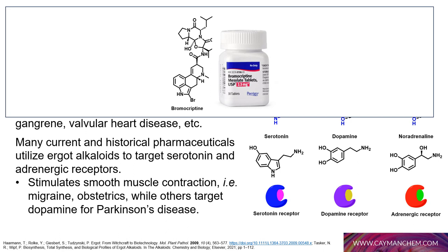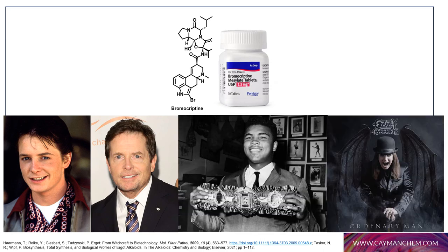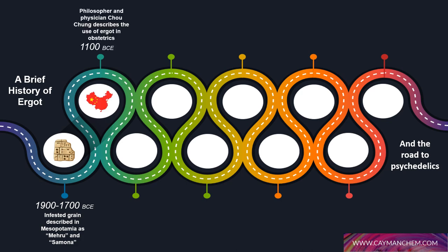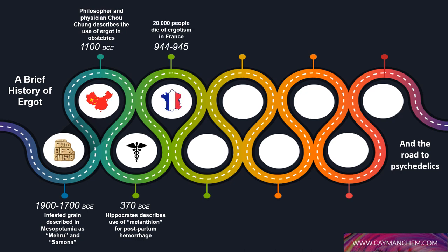Notable figures with Parkinson's disease include Michael J. Fox, Muhammad Ali, and Ozzy Osbourne. Ergot is one of the oldest recorded natural pharmaceuticals — infested grains called simona and meru were recorded as far back as 1900 BCE in Mesopotamia. Chinese physician Chu Chung recorded use of ergot in obstetrics in 1100 BCE, and Hippocrates echoed its use under the name melanthion for postpartum hemorrhage in 370 BCE. However, ergotism claimed the lives of 20,000 people in France between 944 and 945 CE.